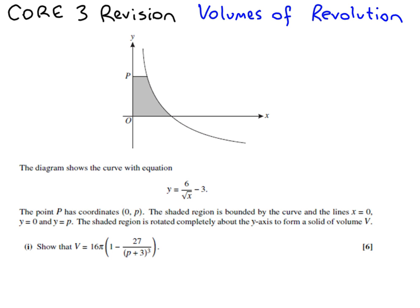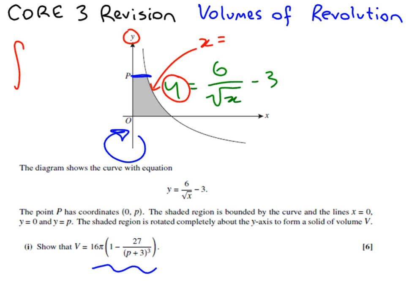Past exam question. The diagram shows the curve y equals 6 over root x minus 3. The point p has coordinates 0, p. The shaded region is bounded by the curve, lines x equals 0, y equals 0, and y equals p. The shaded region is rotated completely around the y axis to form a solid of volume V. Show that V equals 16 pi, etc. One very important thing to note here is we're spinning around the y axis, so we actually want x equals. If you use y equals, you're going to really confuse yourself. We need to substitute into the formula pi x squared dy because it's around the vertical axis.